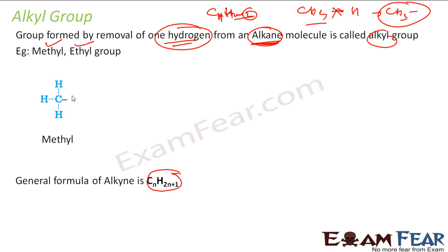If you see, this is methyl, because there was methane here and from this I remove one hydrogen. Carbon is now ready to get bonded with someone. For methyl, carbon has 7 electrons — it had 4 of its own and got 3 from the three hydrogens, giving 7 total. It is not having 8, so it still needs one. So there is one dash mentioned here.